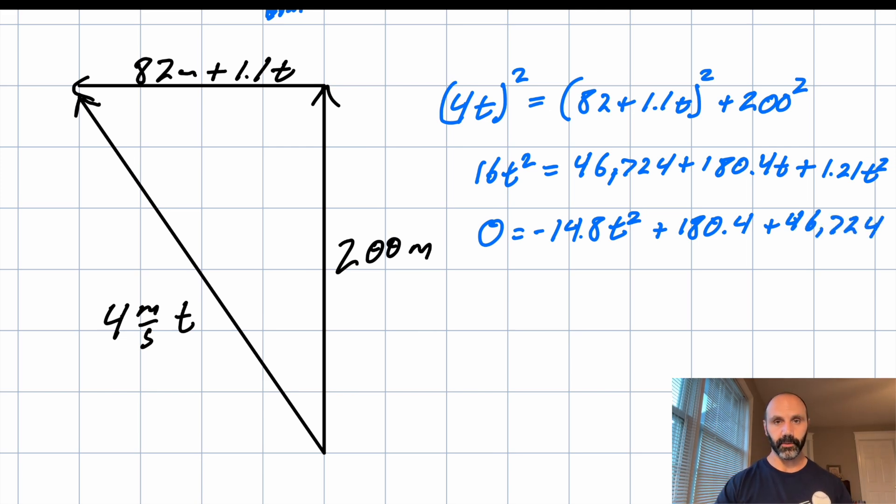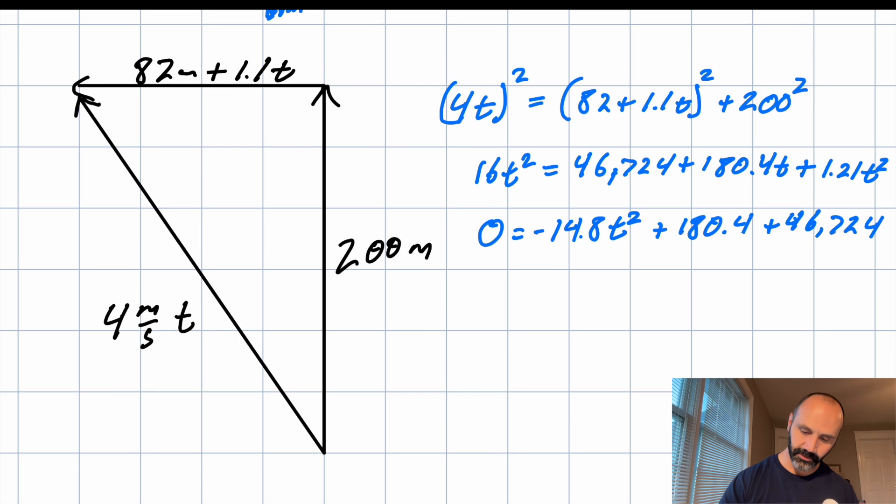Now you use the quadratic formula and you solve. So it's that simple. Just use the formula and it comes out to, you solve for t, right? That's what you're solving for here. Oh, I left out the t on 180.4. Sorry. And t turns out to be 62.6 seconds.